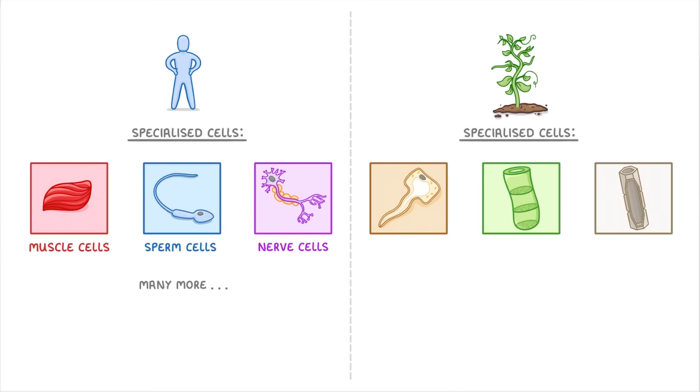Meanwhile examples in plants include root hair cells, phloem cells, and xylem cells, but once again there are loads more.